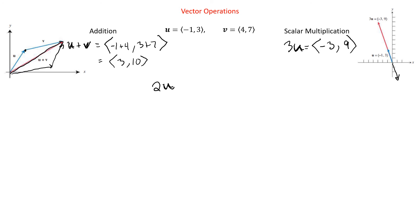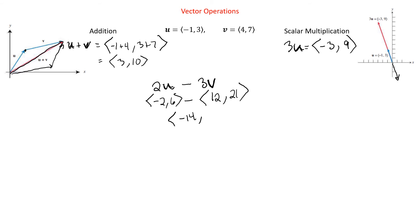We could combine these operations. For 2u − 3v: first, 2u = ⟨−2, 6⟩. Then 3v = ⟨12, 21⟩. Distributing the subtraction: (−2 − 12, 6 − 21) = ⟨−14, −15⟩. That's 2u − 3v. Addition and scalar multiplication don't really get harder than that.